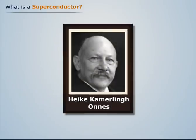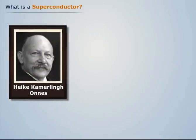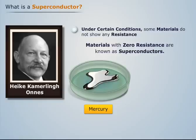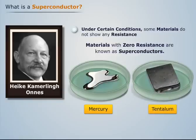In 1911, Dutch physicist Heike Kamerlingh-Onnes discovered that under certain conditions, some materials do not show any resistance. Such materials with zero resistance are known as superconductors.